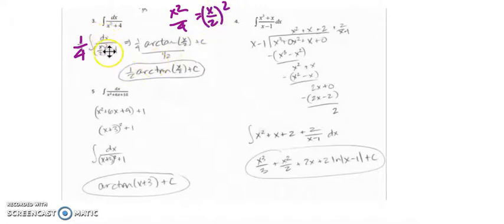So now I'm integrating x over 2 squared plus 1 in the denominator, and I recognize that as arctan. So I'm integrating arctan of x over 2.